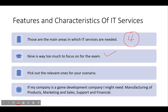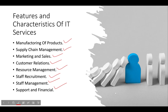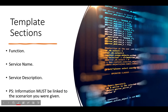Pick out the relevant categories for your scenario. If my company is a game development company, I might choose manufacturing of products because I make games, marketing and sales to market and sell my game on the Xbox Store or Steam, support because things crash on PC, and financials to track spending versus revenue. Choose the categories that fit your scenario — it's never a one-size-fits-all answer.